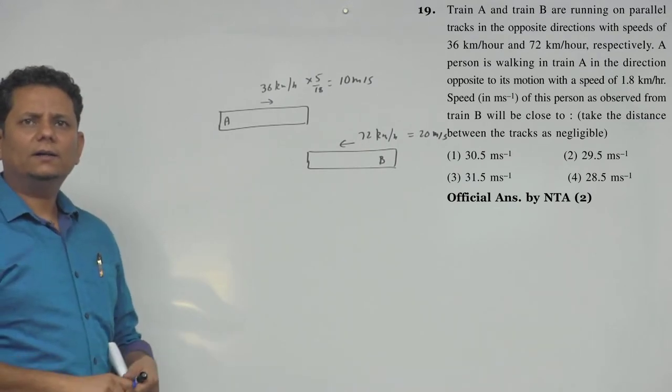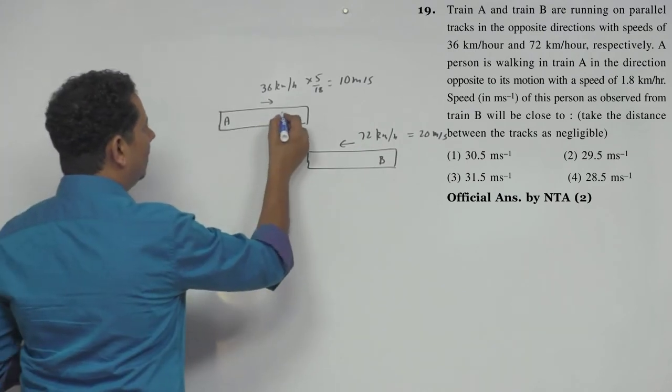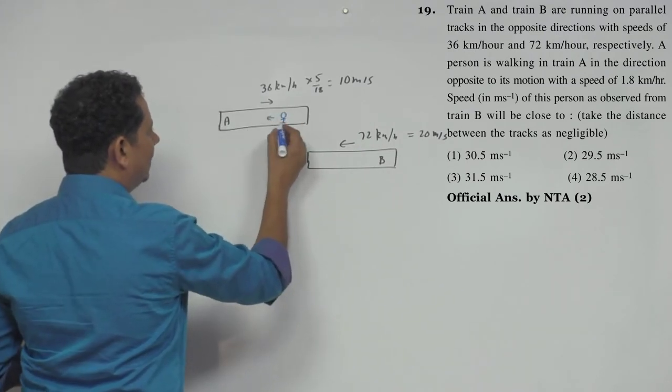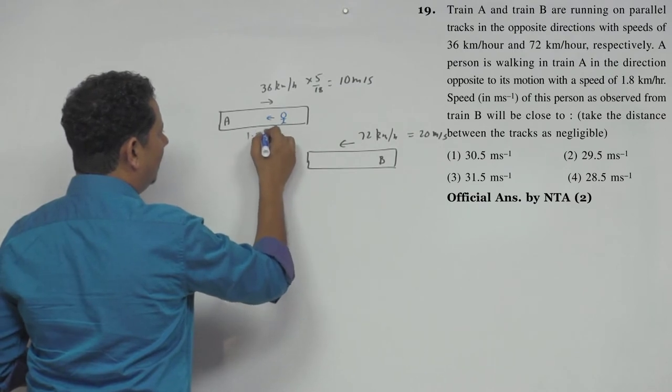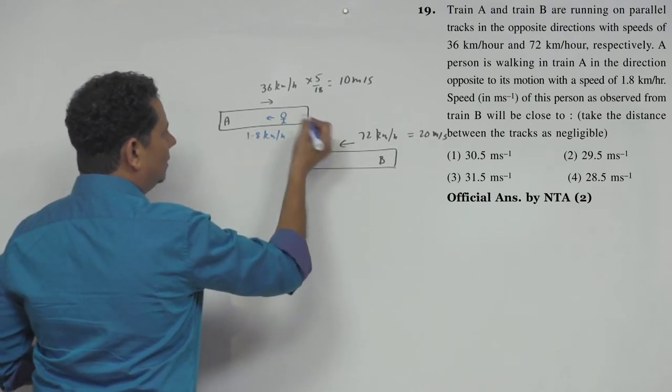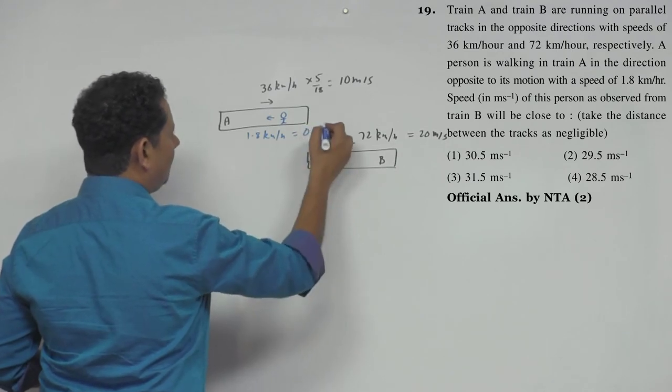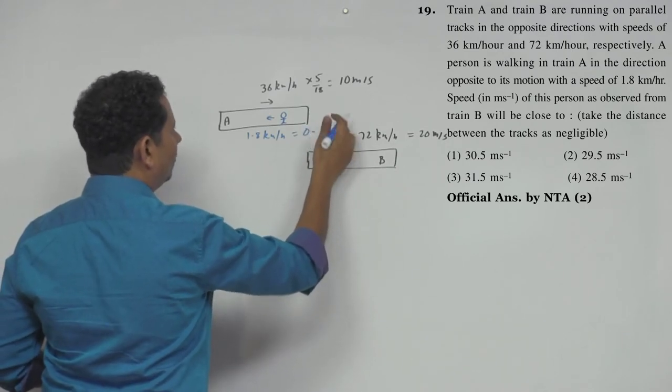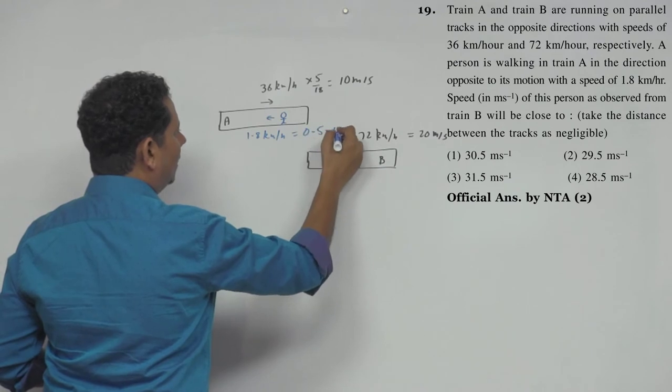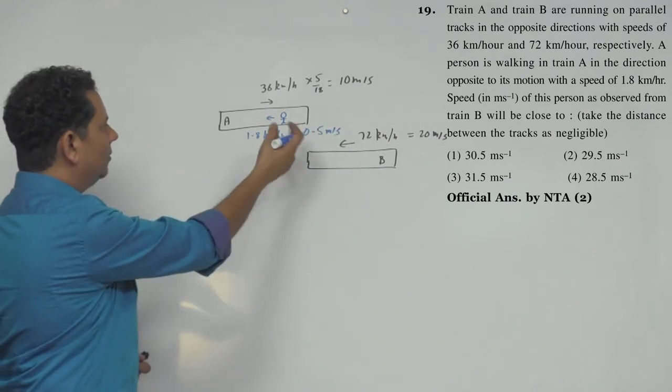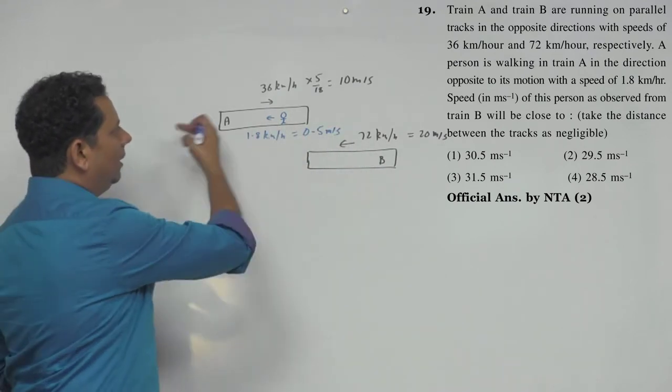Now the person is walking in the opposite direction. The person is walking with speed 1.8 km per hour. When we convert this, this will be 0.5 meter per second. Multiply by 5/18, so 0.5 meter per second.